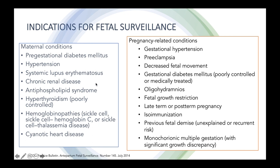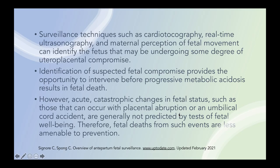For pregnancy-related conditions, we have gestational hypertension, preeclampsia, decreased fetal movement, GDM, oligohydramnios, fetal growth restriction, late-term or post-term pregnancy, isoimmunization, previous fetal demise, monochorionic multiple gestations, and other pregnancy-related conditions. Surveillance techniques such as cardiotocography, real-time ultrasonography, and maternal perception of fetal movement can identify the fetus that may be undergoing some degree of uteroplacental compromise.